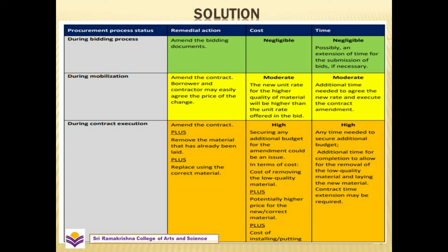In the second stage of the procurement process — during mobilization — if we found any defects, we would be in a position to amend the contract. The borrower and contractor may easily agree on the price of a change, and it would involve moderate cost. The unit rate for the higher quality material will be higher than the unit rate offered in the bid, and the time concern is moderate — additional time needed to agree on the new rate and execute the contract amendment.